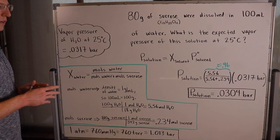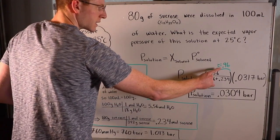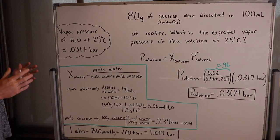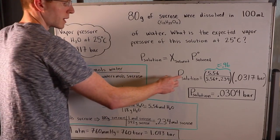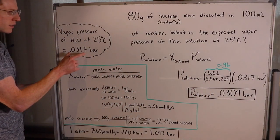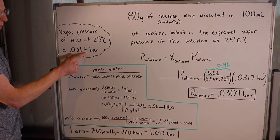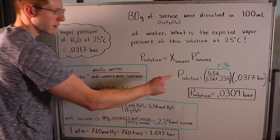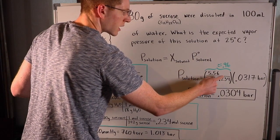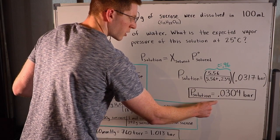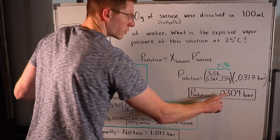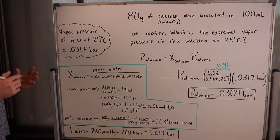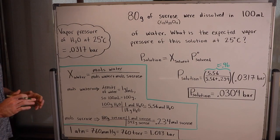Let's think about what happened here. The mole fraction of water was approximately 0.96, meaning about 96% of the solution was made up of moles of water. So if a 100% water solution has a vapor pressure of 0.0317 bar, we'd expect a 96% water solution to have about 96% of that vapor pressure — which is approximately 0.0304 bar. I really hope this video helped. If it did, please hit the thumbs up button, share it with a friend, and I'll see you in the next one.